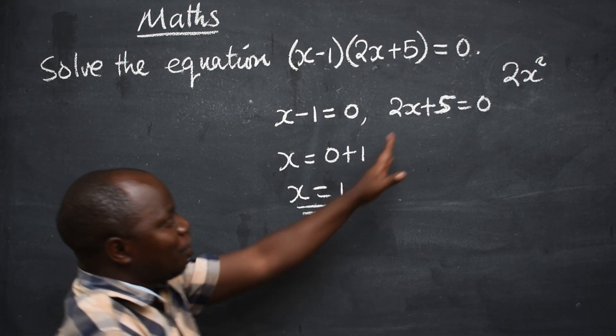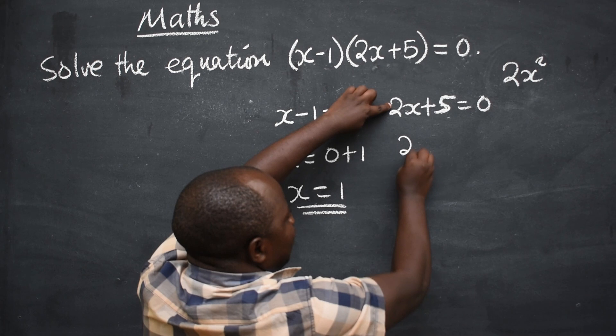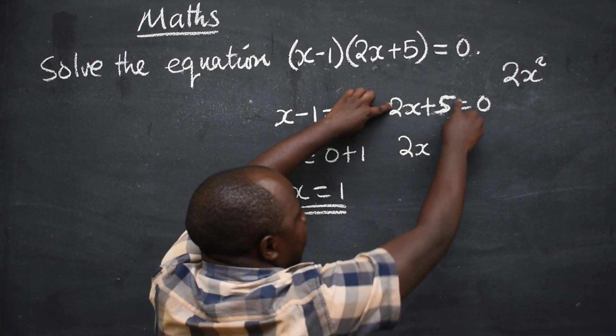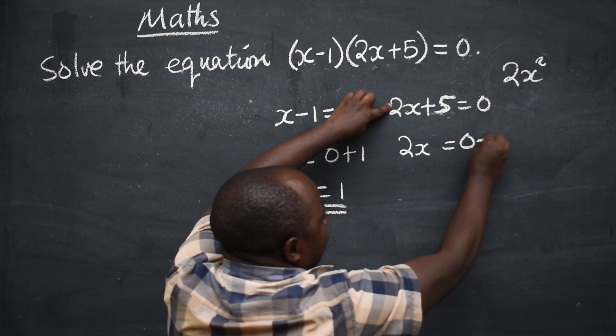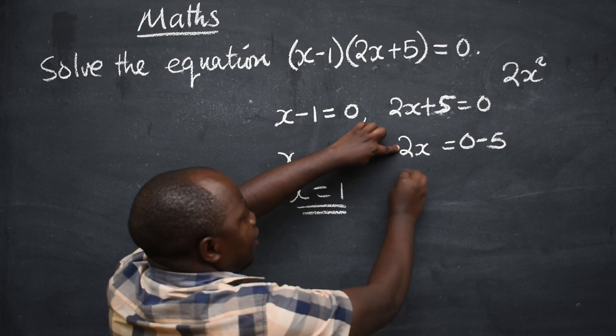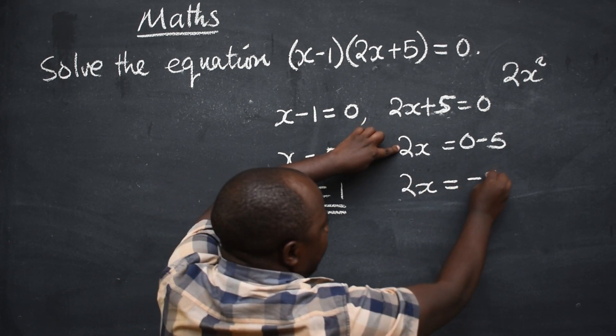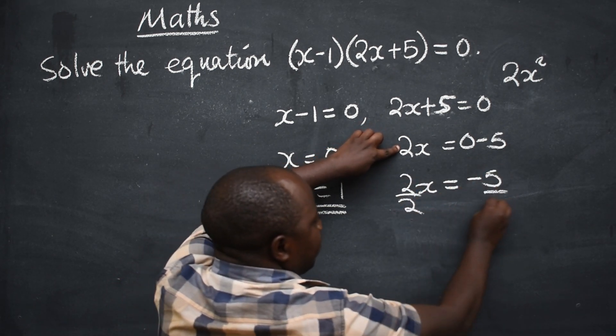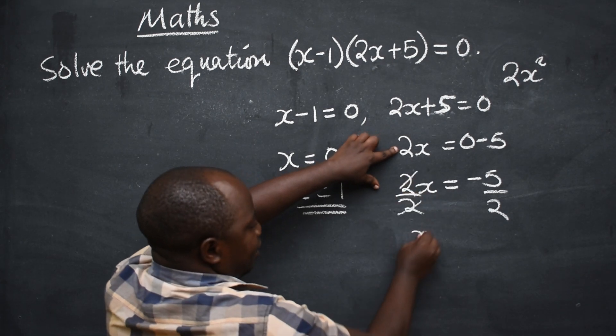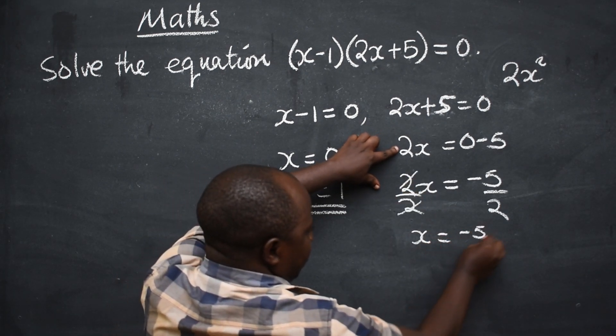On the other side, you are going to say 2x. This positive 5 will cross the equal sign to be negative 5. Then 2x is equal to negative 5. Divide by 2. Cancel this. x is equal to negative 5 over 2.